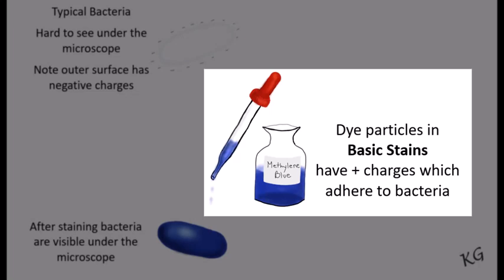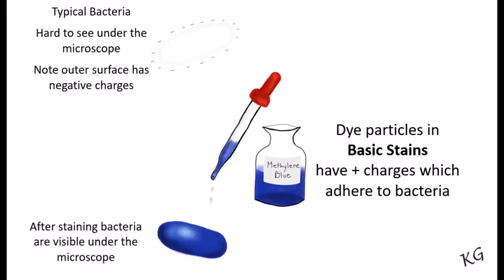such as methylene blue, crystal violet, safranin, can all be used to stain the bacteria because these basic dyes have positively charged dye particles.